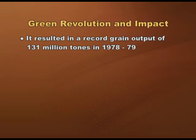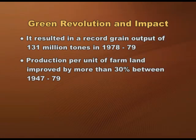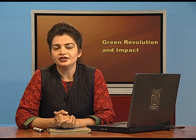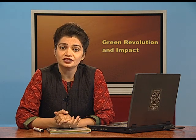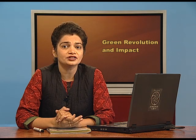The green revolution changed India's status from a food-deficient country to one of the world's leading agricultural nations. Agricultural productivity increased sharply, resulting in a record grain output of 131 million tons in 1978–79. Production per unit of farmland improved by more than 30 percent between 1947 and 1979. By 1990, both yield of rice and wheat doubled compared to 1965. In the 1960s, only 1.9 million hectares of land was using high yielding variety seeds. By the 1980s, when the green revolution was at its peak, 75 percent of total land under wheat cultivation and 45 percent of land producing rice used high yielding variety seeds. By the early 1990s, this increased to 63.9 million hectares.